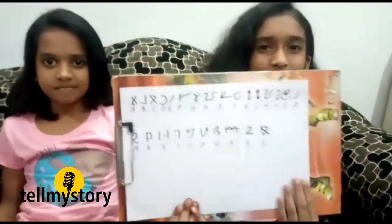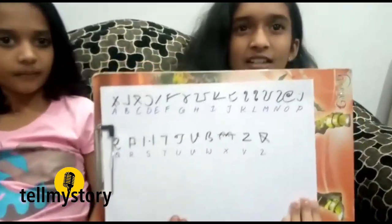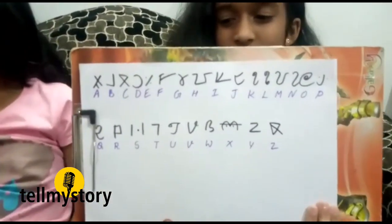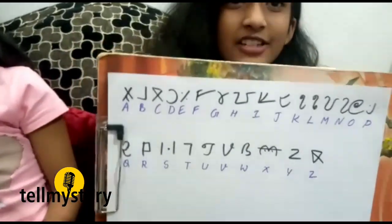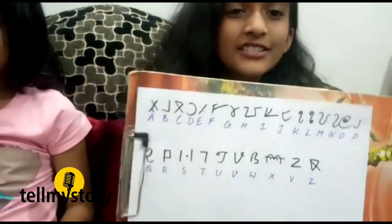I'll show you. These are all 26 alphabets. You can see A, B, C, D, E, F, G, H — all 26 are there. First you have to learn all these alphabets.